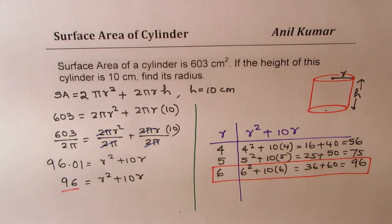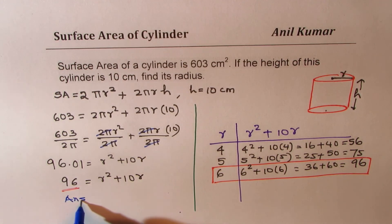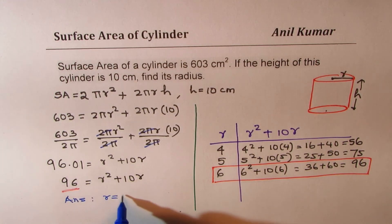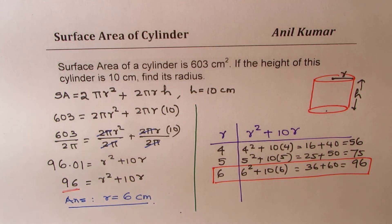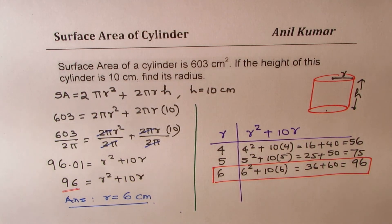So making a table like this helps us to solve such questions. So we can write down our answer, and that is r is equal to 6 centimeters.